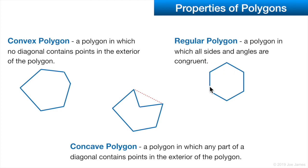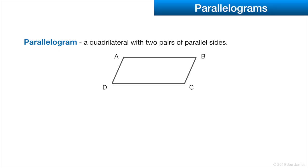A regular polygon has congruent angles and sides. A parallelogram is a quadrilateral, or four-sided polygon, with two pairs of parallel sides — in other words, opposite sides are parallel.